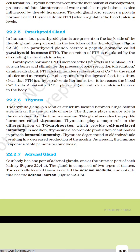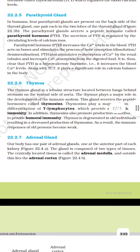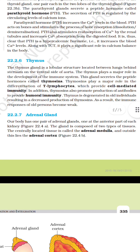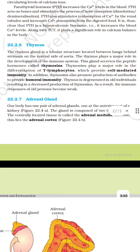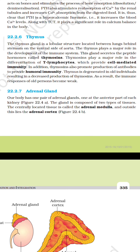Parathyroid gland. In humans, four parathyroid glands are present on the backside of the thyroid gland, one pair in each of the two lobes of the thyroid glands. The parathyroid glands secrete a peptide hormone called parathyroid hormone (PTH). The secretion of PTH is regulated by the circulating level of calcium ions. Parathyroid hormone increases the calcium level in the blood by acting on bones and stimulating the process of bone resorption, i.e. dissolution or demineralization. It also stimulates reabsorption of calcium by the renal tubules and increases calcium absorption from digested food. Thus, PTH is a hypercalcemic hormone that increases blood calcium levels, and together with thyrocalcitonin plays a significant role in calcium balance in the body.